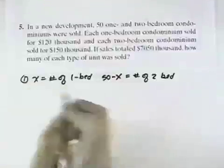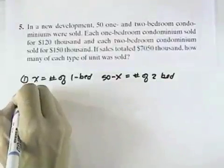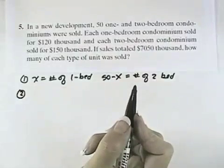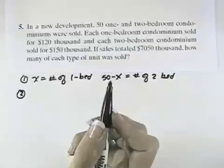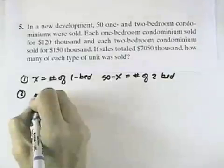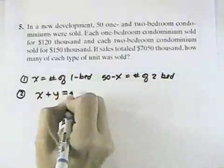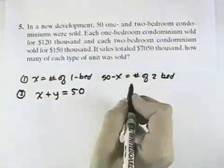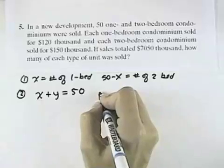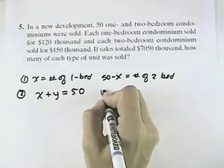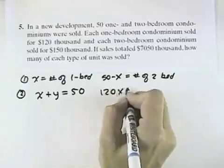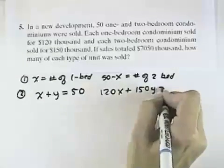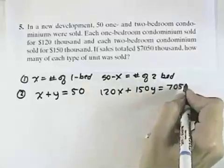Then what we want to do is write our system of equations. We've got that the number of 1-bedroom condos plus the number of 2-bedroom condos equals 50, and that the number of 1-bedroom condos at $120,000 each plus the 2-bedroom condos at $150,000 each will equal $7,050,000.